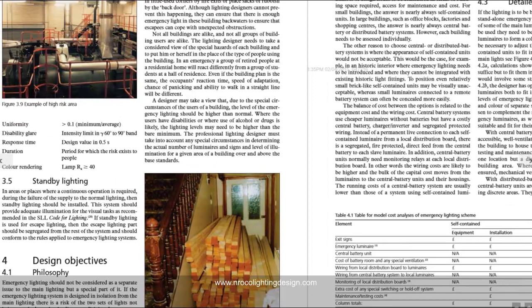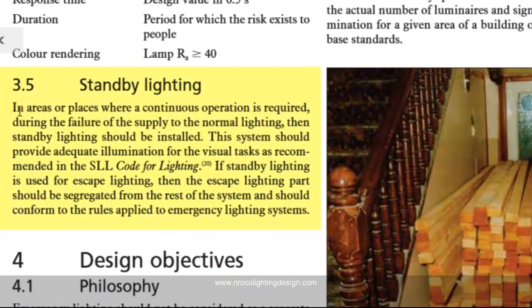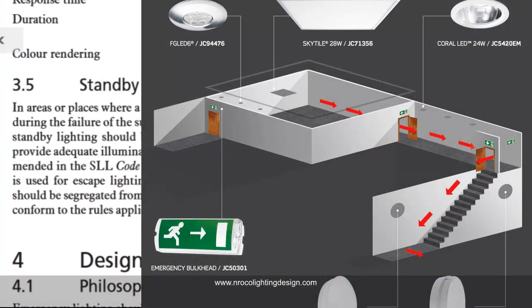In section 3.5, it is mentioned that in areas or places where continuous operation is required during failure of the normal lighting supply, standby lighting should be installed. This system should provide adequate illumination for the visual tasks as recommended in the SLL Code for Lighting. If the standby lighting is also used for escape lighting, the escape lighting parts should be segregated from the rest of the system and conform to the rules for emergency lighting systems. So if a luminaire serves both normal and emergency lighting, it must meet the required emergency specification for that room — and I always apply a minimum of one lux.